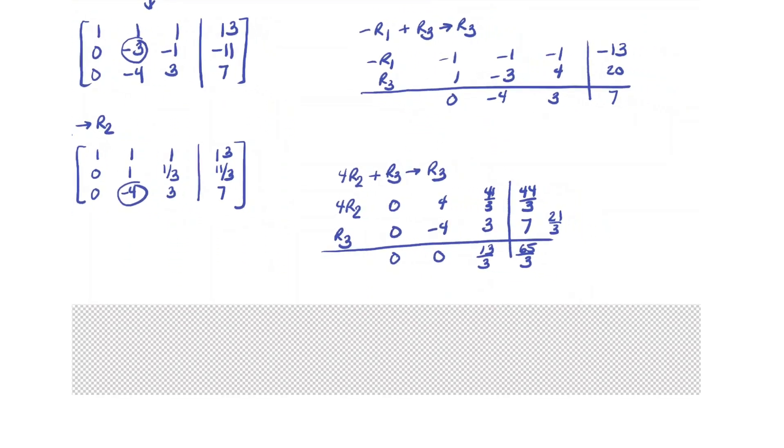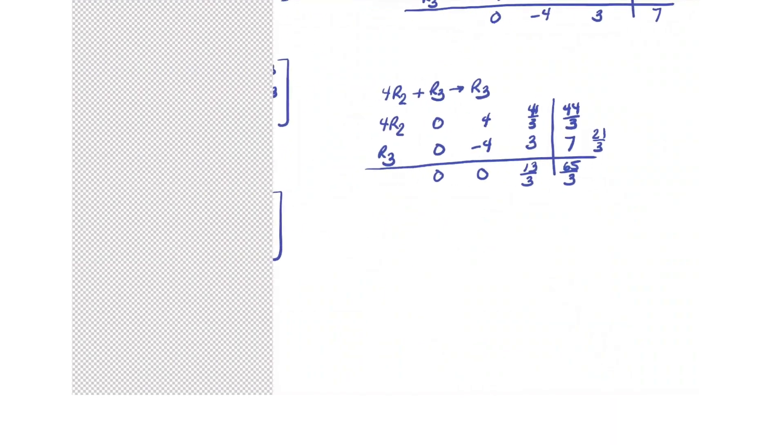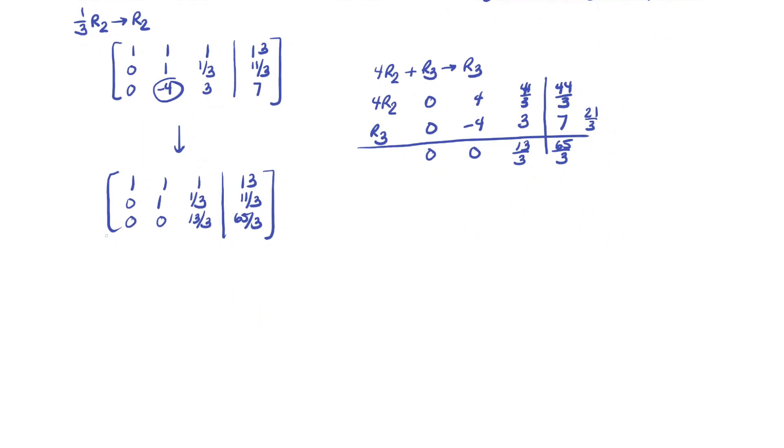So new matrix again. First two rows untouched. And then new third row: 0, 0, 13 thirds, 65 thirds. And now to get that 1 where we want it, we're going to multiply the third row by the reciprocal of 13 thirds, which is 3 thirteenths. So 3 thirteenths row 3 becomes the new row 3. And then I think we're home free.